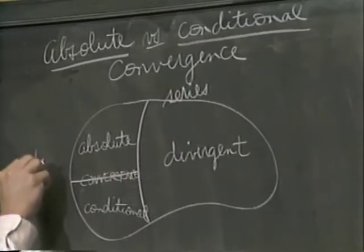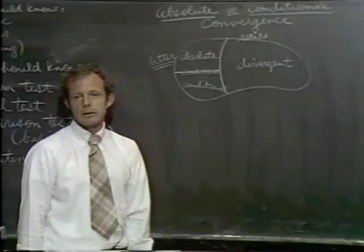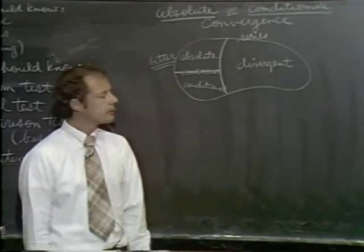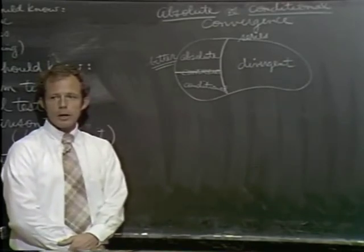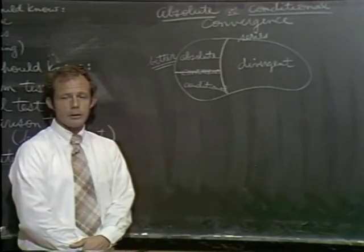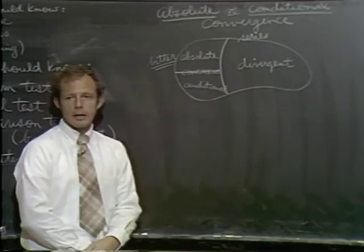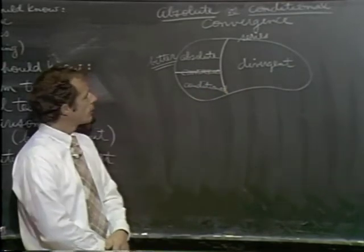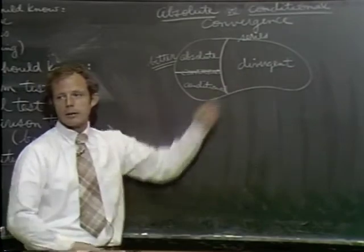Absolute convergence is the better kind. There's a reason for trying to establish whether a series converges absolutely, because if it does, it has a lot of nice properties. If it converges conditionally, it's not so good. So from now on, when you come across a series with negative signs, you'll ask: does it diverge? If not, does it converge absolutely? If not, does it converge conditionally? If not, then it must diverge.